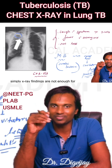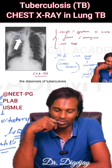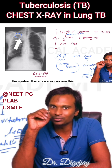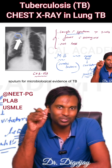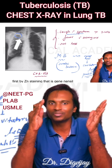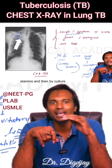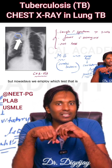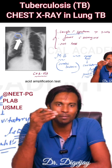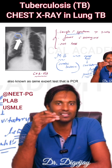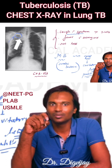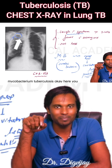Simply X-ray findings are not enough for the diagnosis of tuberculosis. As this person is already having cough with sputum, you can use this sputum for microbiological evidence of TB — that is, for the detection of mycobacterium tuberculosis. First by ZN staining, that is Ziehl-Neelsen staining, and then by culture. But nowadays, we employ the CB-NAAT test, that is cartridge-based nucleic acid amplification test, also known as the GeneXpert test — a PCR-based test, that is polymerase chain reaction. So having an X-ray like this will increase the suspicion of mycobacterium tuberculosis.